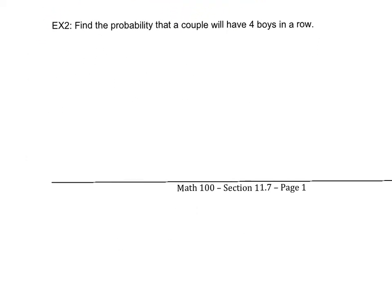In example two, we want to find the probability that a couple will have 4 boys in a row. The gender of the first child does not affect the gender of the second, third, or fourth child — in theory, these are independent events. So the probability of having a boy is one half, and we multiply one half four times, giving us 1 over 16.